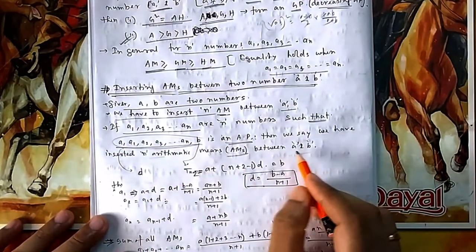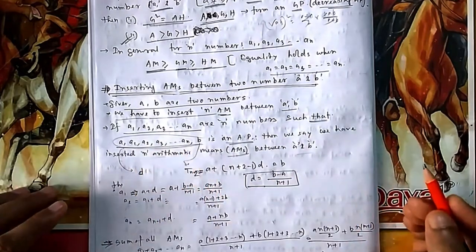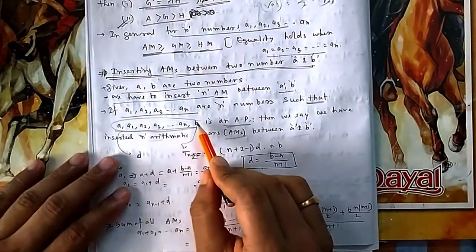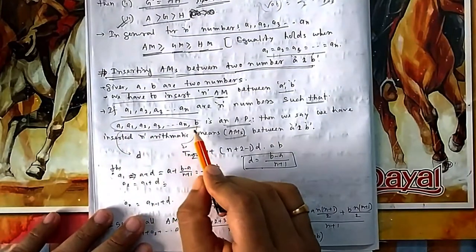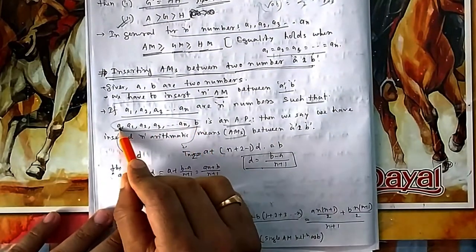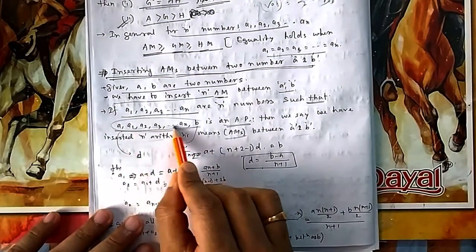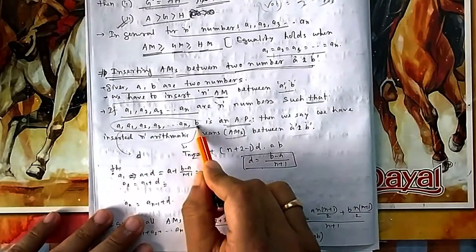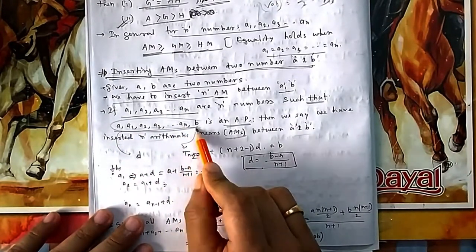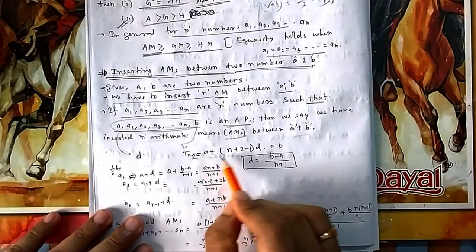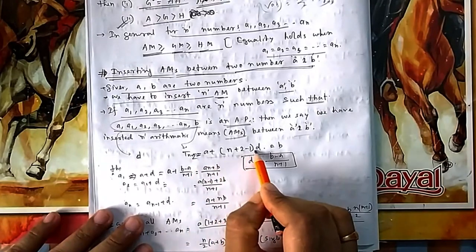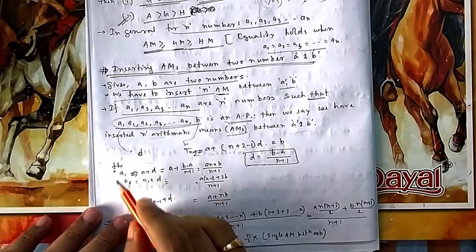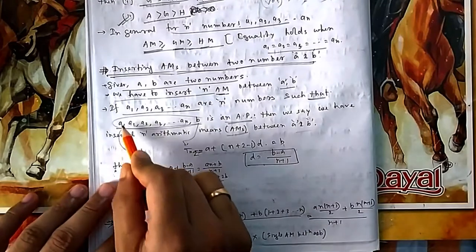Now you can easily find them. How many terms are in the series? There are n plus 2 terms. The last term t(n+2) equals b. Using the AP last-term formula: a + (n+2−1)·d = b, which gives you d.